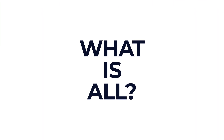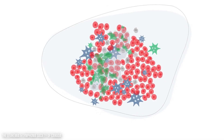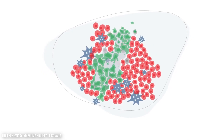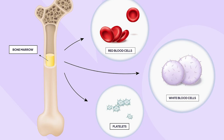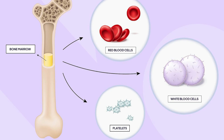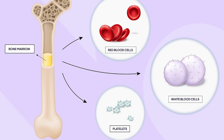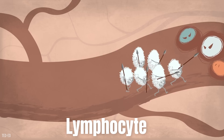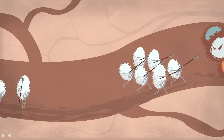So what exactly is acute lymphoblastic leukaemia? ALL is a rare but fast-growing cancer of the blood and bone marrow. Your bone marrow is the soft, spongy tissue inside your bones where blood cells are made. ALL affects a specific type of white blood cell called a lymphocyte, which normally helps your body to fight infections.